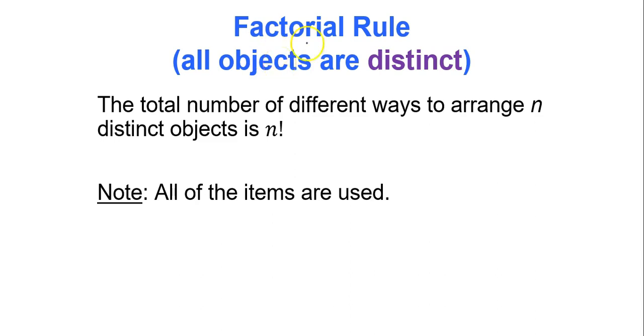So our next stop is the factorial rule where all objects are distinct. Distinct means they're not duplicates of each other. So the total number of different ways to arrange n distinct objects is n factorial. So for instance, if you were an elementary school teacher and you had 15 students in your class, the number of ways you could line them up is 15 factorial, because you have 15 students, they're obviously all different than each other, they're not duplicates, and all the items are used, all 15 students are used.